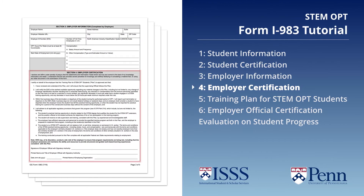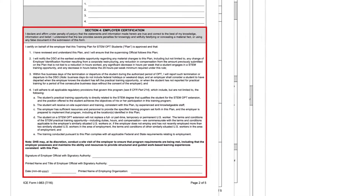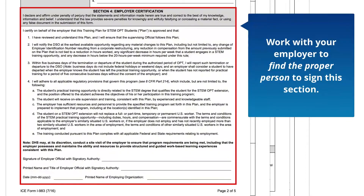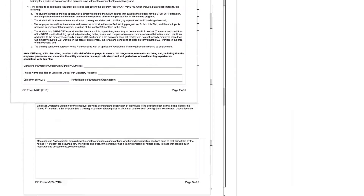Section 4: Employer Certification. Work with your employer to choose the proper person to sign this portion of the I-983 form. It could be an HR representative, your direct supervisor, etc.